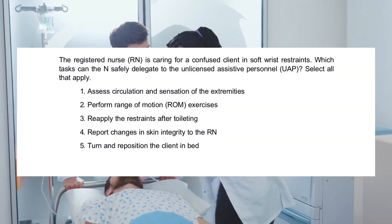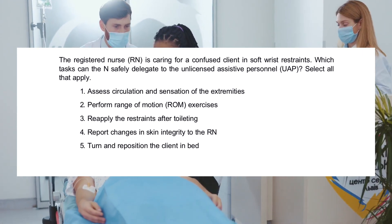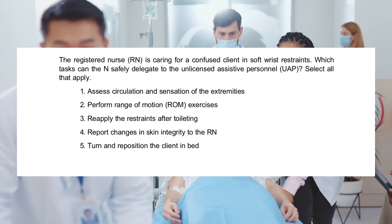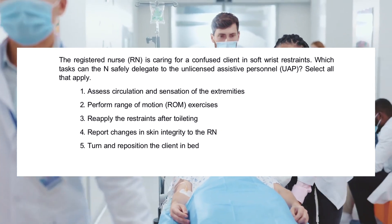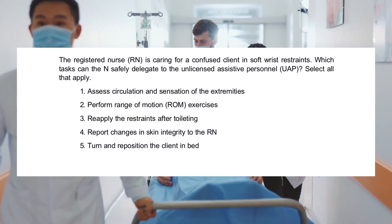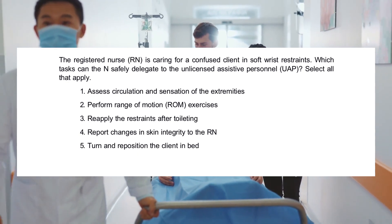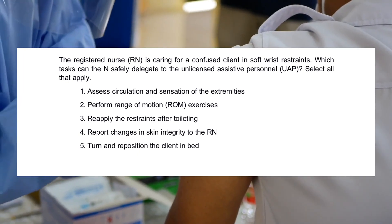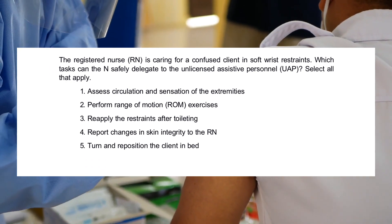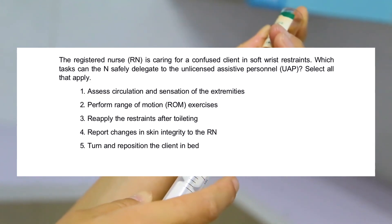The registered nurse RN is caring for a confused client in soft wrist restraints. Which tasks can the RN safely delegate to the Unlicensed Assistive Personnel? Select all that apply. 1. Assess circulation and sensation of the extremities. 2. Perform range of motion ROM exercises. 3. Re-apply the restraints after toileting. 4. Report changes in skin integrity to the RN. 5. Turn and reposition the client in bed.